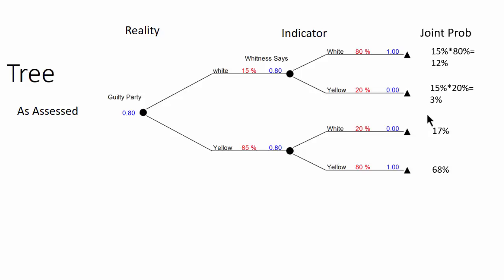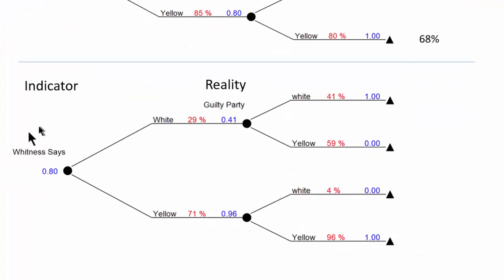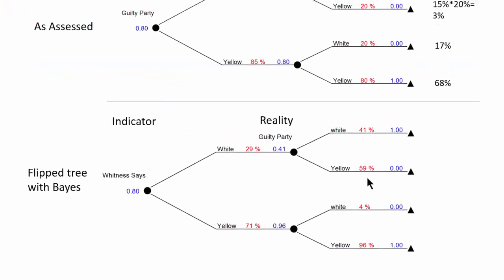So now what happens when we flip this tree? Here is our flip tree and it talks about what the witness said and then what the reality is. Indicator reality. This tree shows the actual probabilities of 29%, 41%, 59%. But what we want to understand is where they came from.